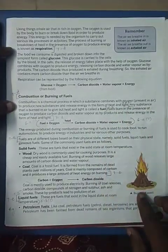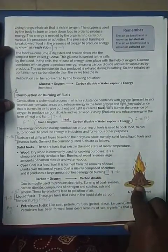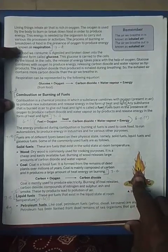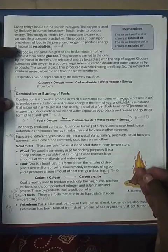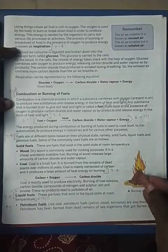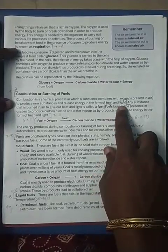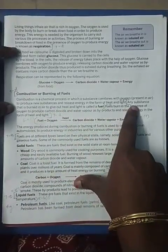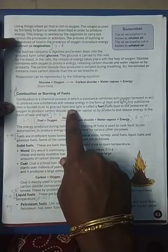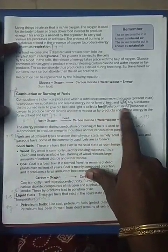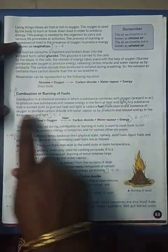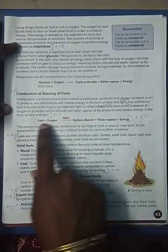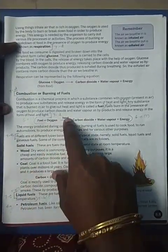For example, if you burn a wooden stick or charcoal, heat is produced in the form of flames and also light. Any substance that is burned in air to give out heat and light is called fuel. Fuels burn always in the presence of oxygen, and they give out carbon dioxide and water vapor.